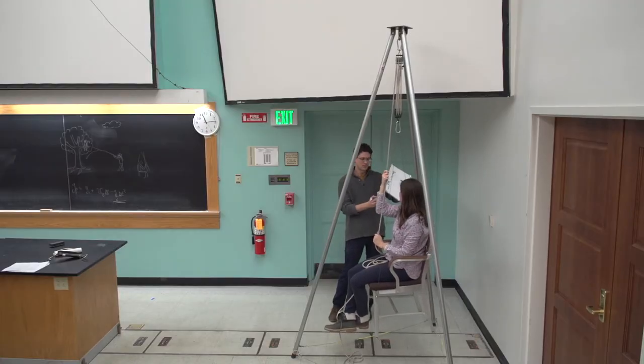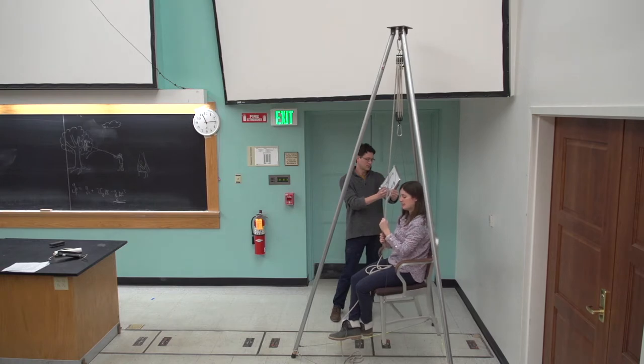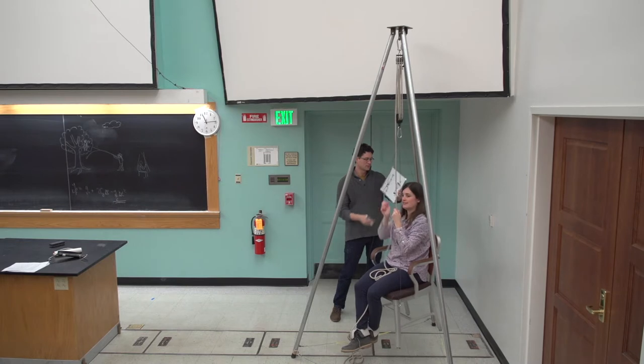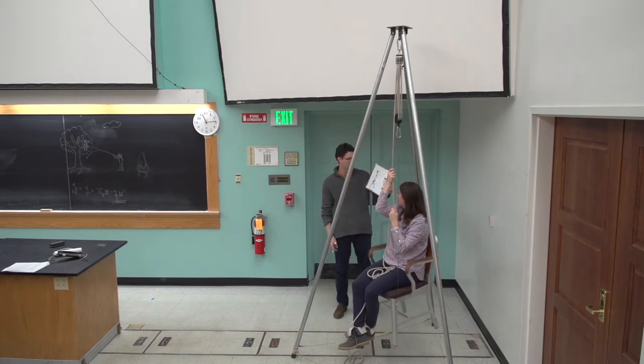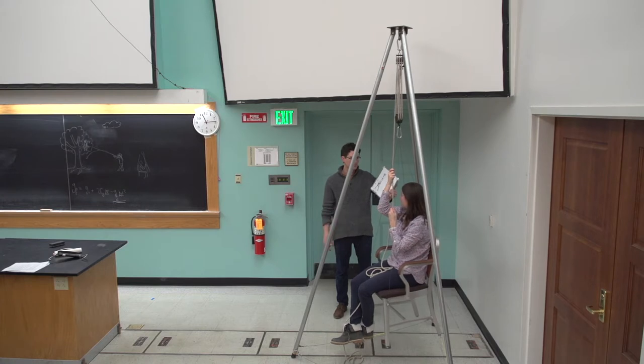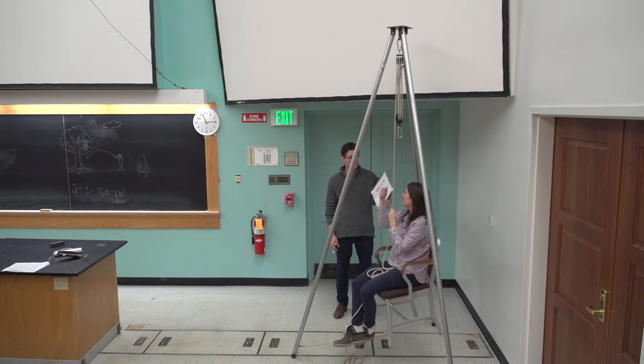And then what else do we have? Well, the weight of the chair and myself. Right, so that's MG. And that's six times the tension. Okay, so if you don't accelerate, I guess that means that you only need one-sixth of your weight to push with. The tension only needs to be one-sixth. Do you think we could check this out?